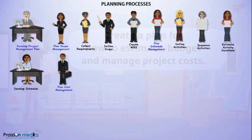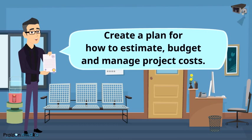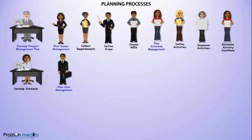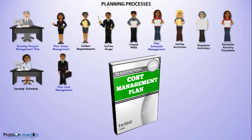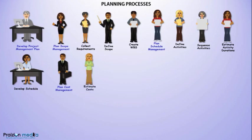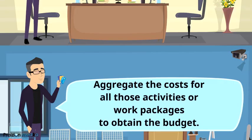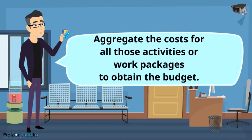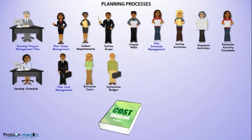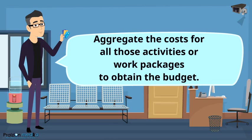Moving to the Cost Knowledge Area, the first process is Plan Cost Management, where a plan is developed for how costs will be estimated, budgeted, and managed. The next process is Estimate Costs, where costs for the various work packages or tasks are estimated. The next process is Determine Budget, where those cost estimates are rolled up into a final total amount.